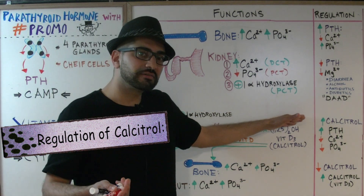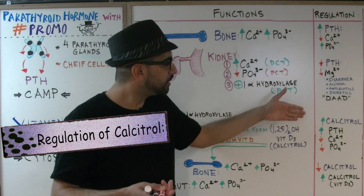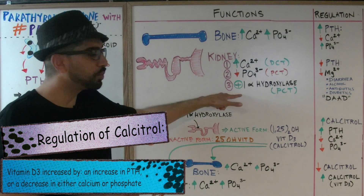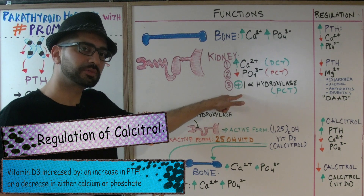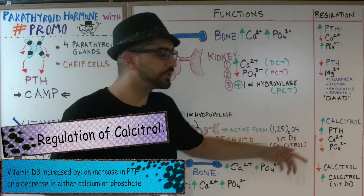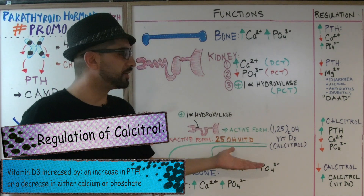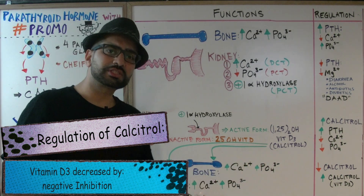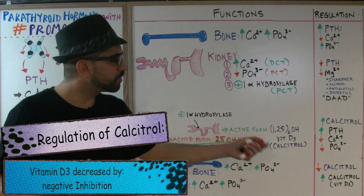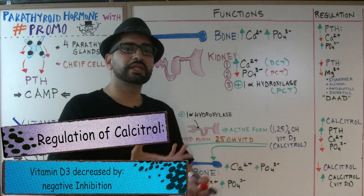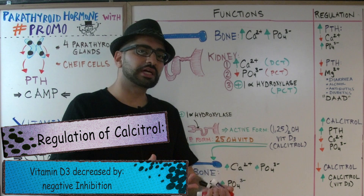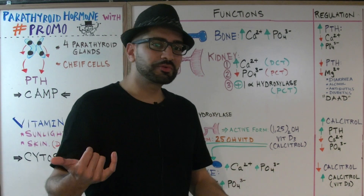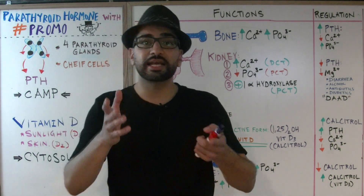For the regulation of vitamin D: parathyroid hormone increases calcitriol levels by stimulating one-alpha hydroxylase at the proximal convoluted tubule. Low levels of calcium or phosphate also stimulate more production of vitamin D. On the other hand, once there is too much calcitriol, it provides negative inhibition and stops its own production.